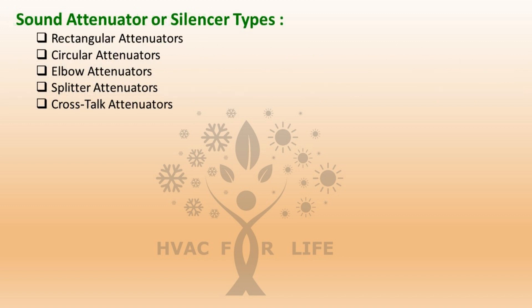In this video we will go over the different types of sound attenuators, their applications and selection criteria. Sound attenuator types include: rectangular attenuators, circular attenuators, elbow attenuators, splitter attenuators, and cross-top attenuators.